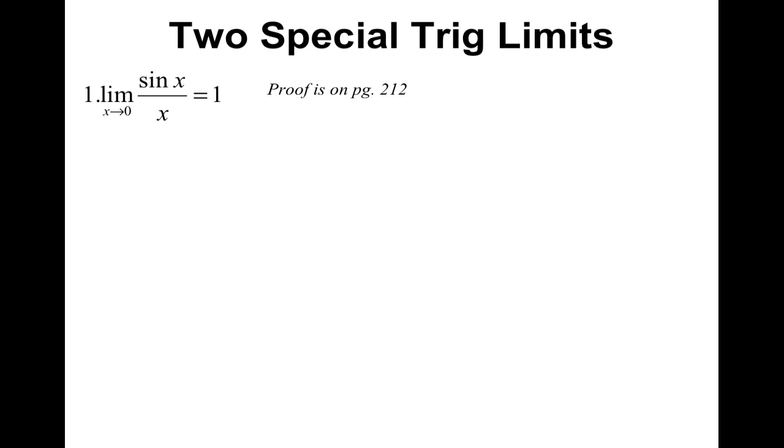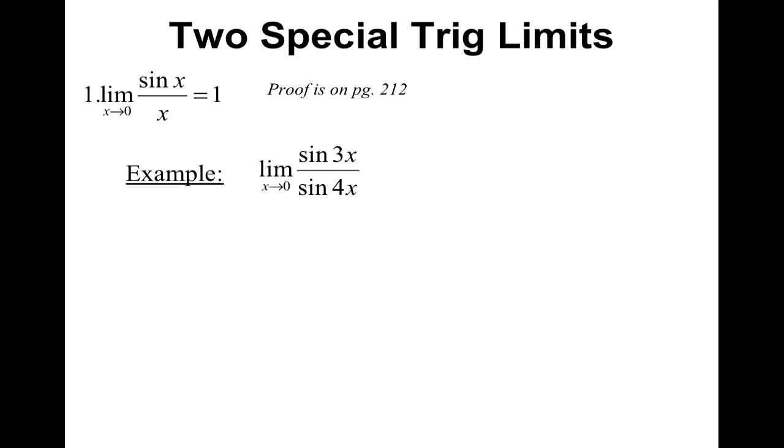Now, the two special trig limits. I'm going to give you these limits — if you really care about the proof, the proof is in your book. The first one is: the limit as x approaches 0 of sine x over x equals 1. The proof is on page 212. We're going to use this limit property to do an example. It does not matter if it's sine x over x or x over sine x — either way it will equal 1. You have to be careful because x must be approaching 0. The big piece is that whatever is on the bottom has to match what is inside of the sine function — these two things need to be identical.